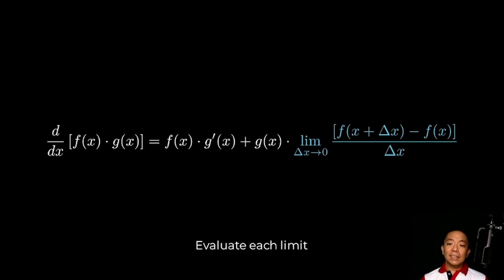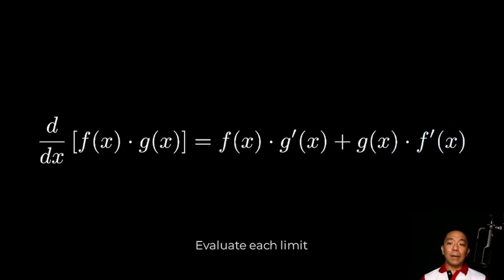And evaluating the limit as delta x approaches zero for f of x plus delta x minus f of x all over delta x. Again, this is the definition of the derivative of f of x. So this simplifies to f prime of x.